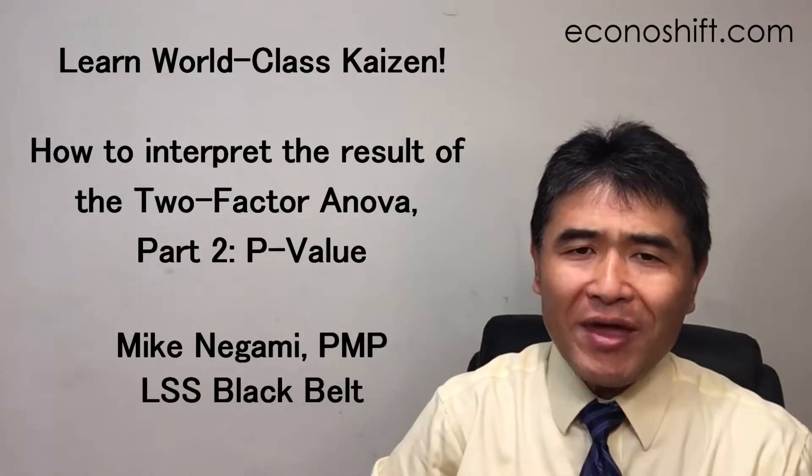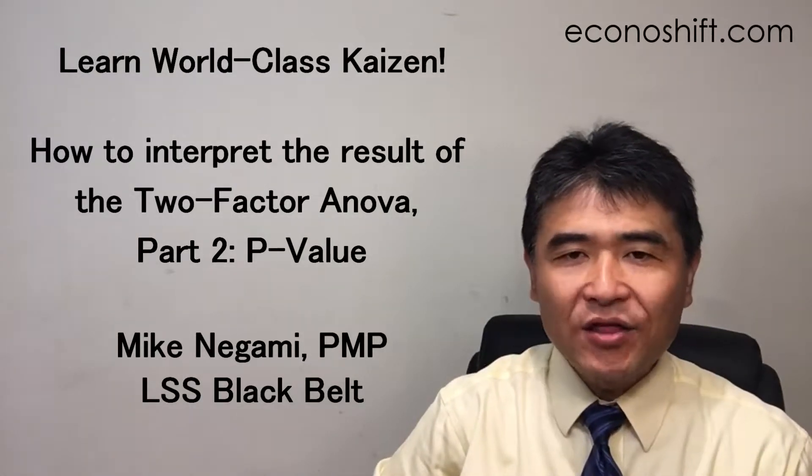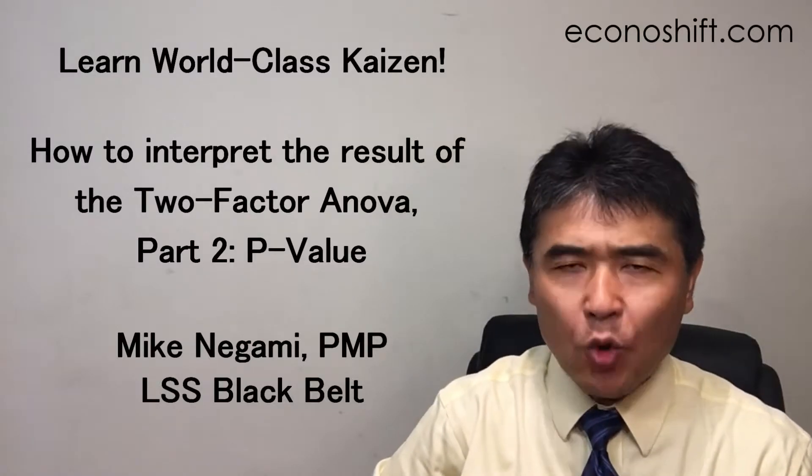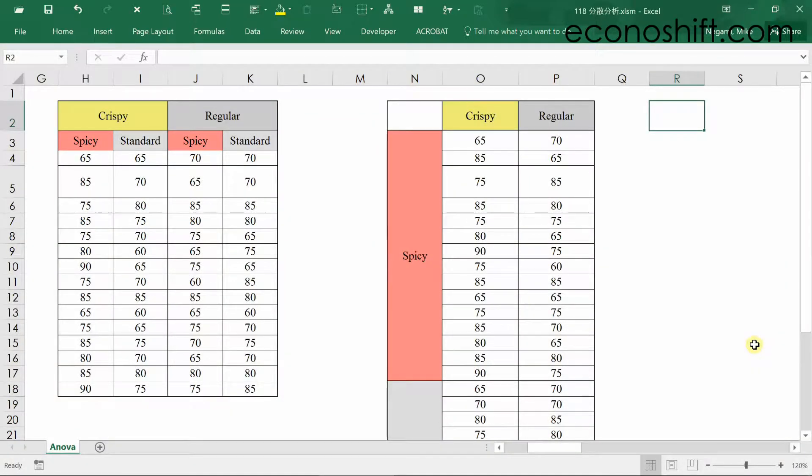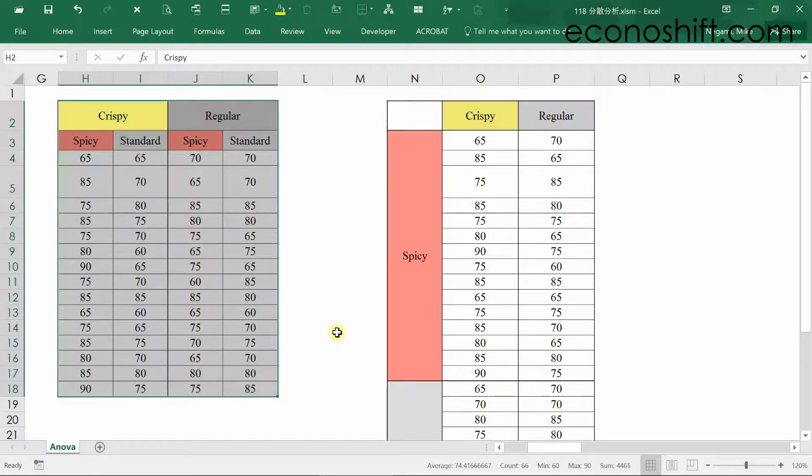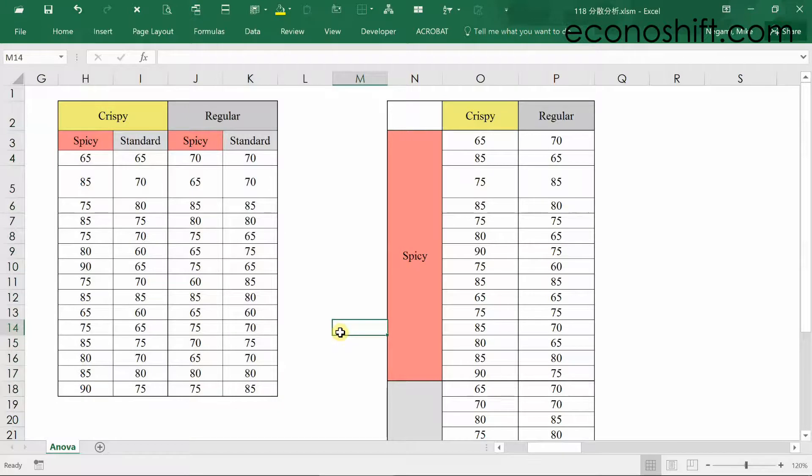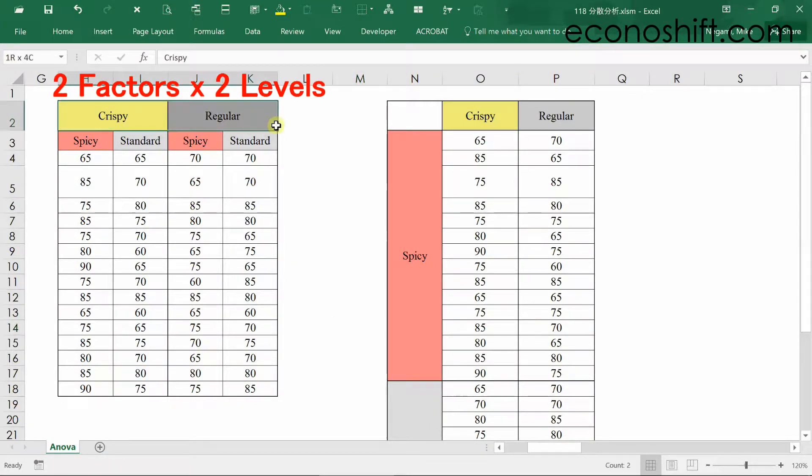In the last video, we went up to producing the result of two-factor ANOVA with the Excel data analysis tools. A quick recap from the last video: the data on the left is the score data that was rated by 60 people for four prototypes of fried chicken dishes in a restaurant. The data consists of the factor of texture, such as crispy and regular, and another factor of seasoning, such as spicy and standard.